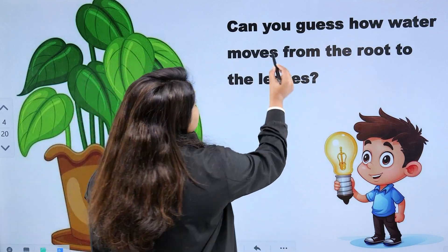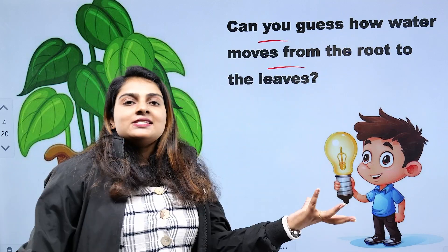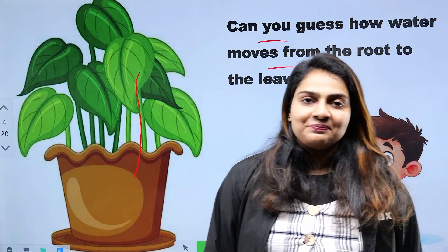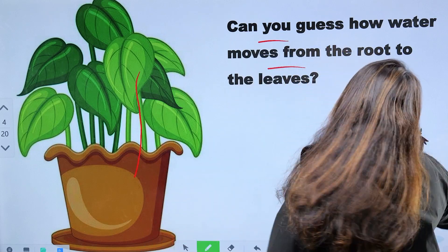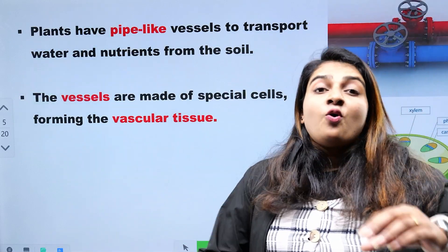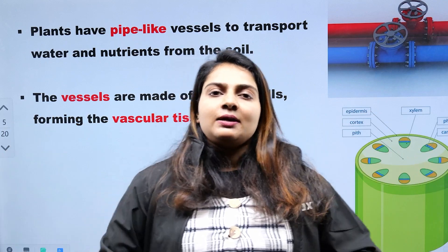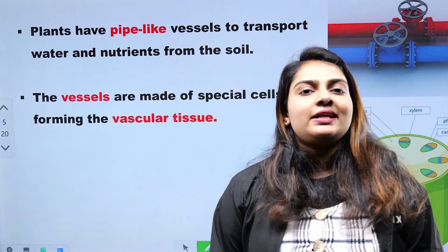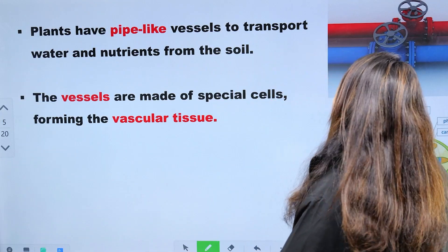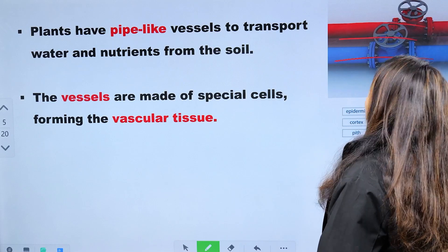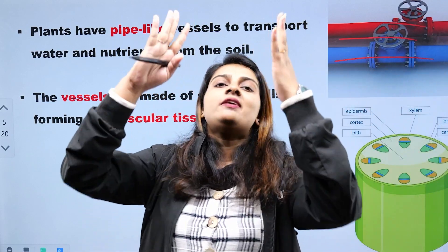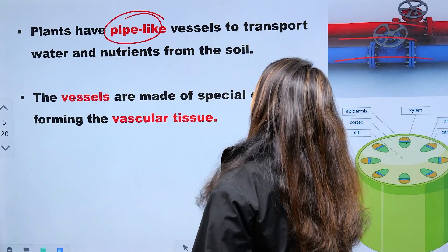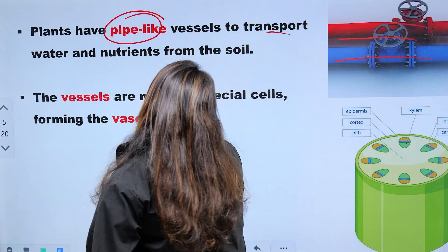Can you guess how water moves from root to the leaves? Plants have pipe-like vessels to transport water and nutrients.